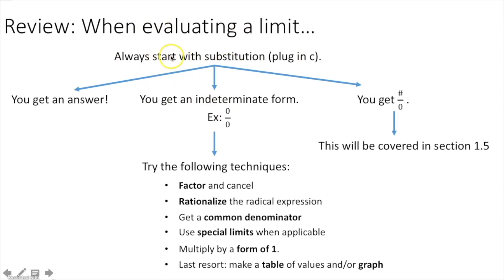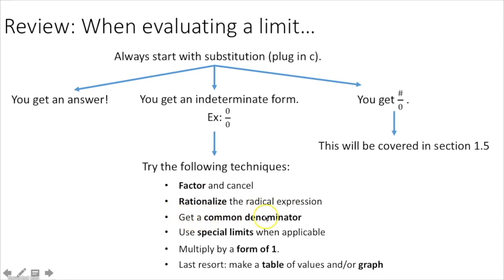When evaluating a limit, always start by plugging it in — always start by taking that c value and plugging it in the function for x. If you get a number, you're done; you got your answer. If you get an indeterminate form like 0 over 0, you need to try to simplify it by factoring and canceling, rationalizing the radical expression, getting a common denominator, using special limits, multiplying by a form of 1, or if all else fails, you can make a table of values and/or graph.